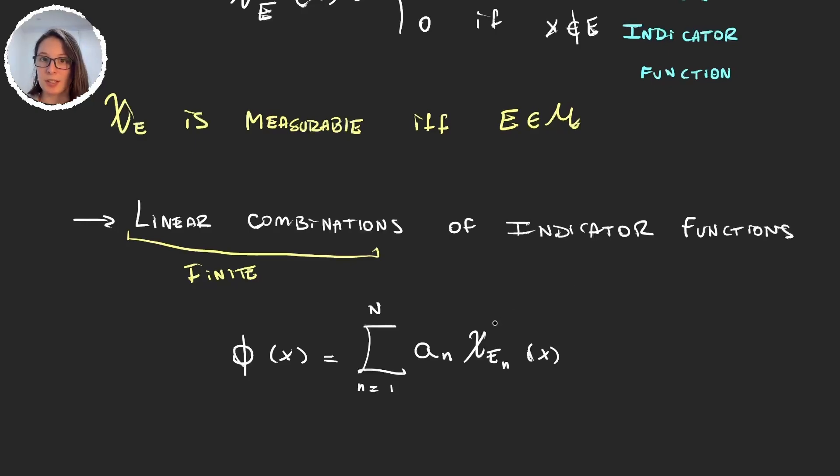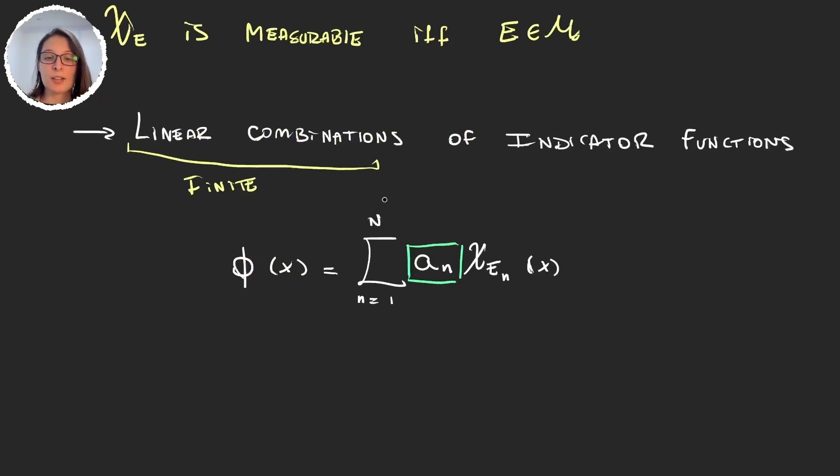Now in this linear combination we can see a few things. First of all, we have this coefficient which is going to be any number, and this number can be taken either on the real numbers or complex depending on whether we want our function to be a real or complex function.